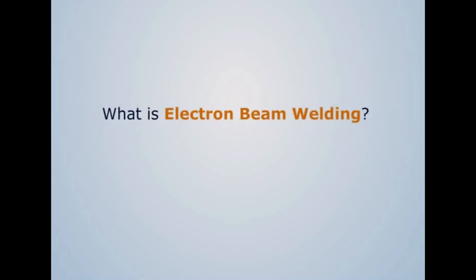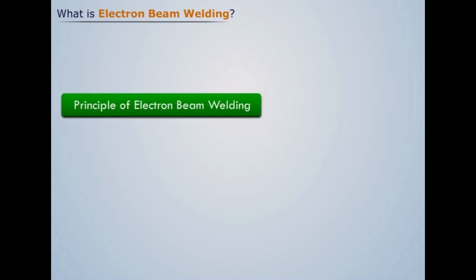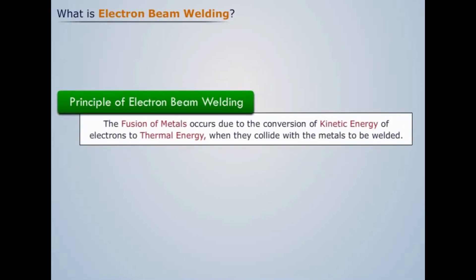What is electron beam welding? Electron beam welding is based on the principle that the fusion of metals occur due to the conversion of kinetic energy of electrons to thermal energy when they collide with metals to be welded.